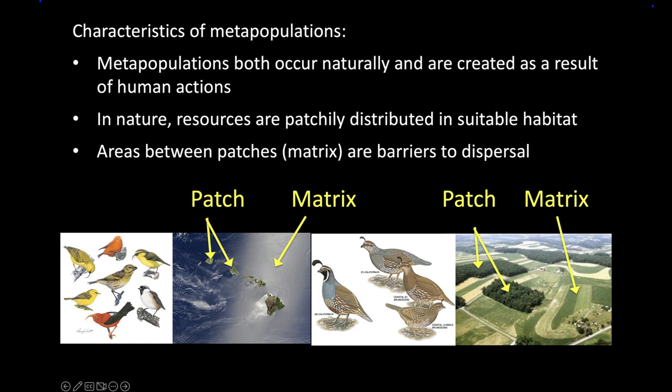The patches are separated by what we call matrix. The matrix is not Keanu Reeves — the matrix is the gunk in between. In some cases the matrix can be massively hostile to the organism. In other cases it's not so hostile, but they just can't make their living there — they can't settle down and have offspring.